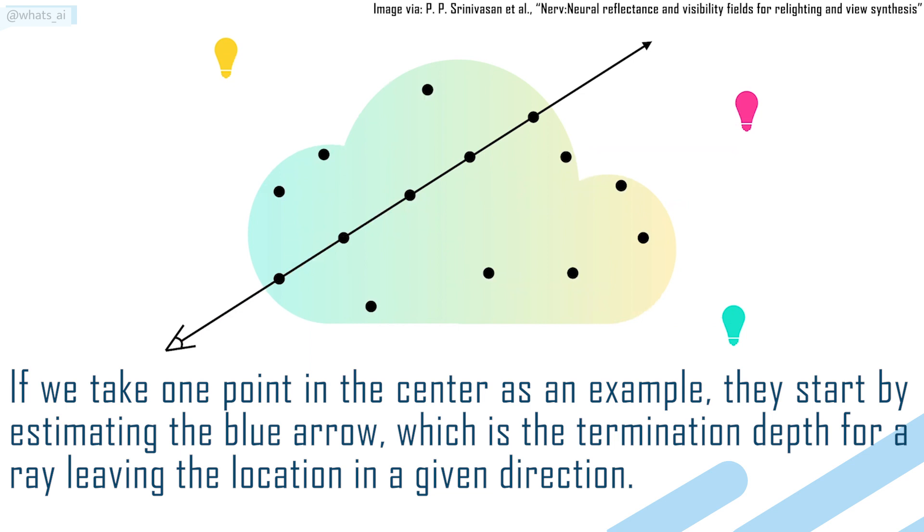If we take one point in the center as an example, they start by estimating the blue arrow, which is the termination depth for a ray leaving the location in a given direction.